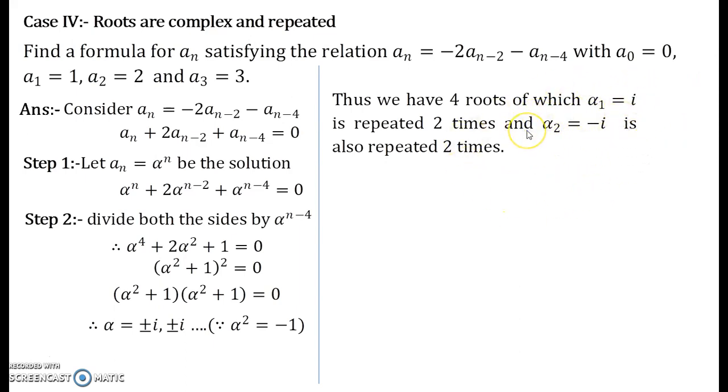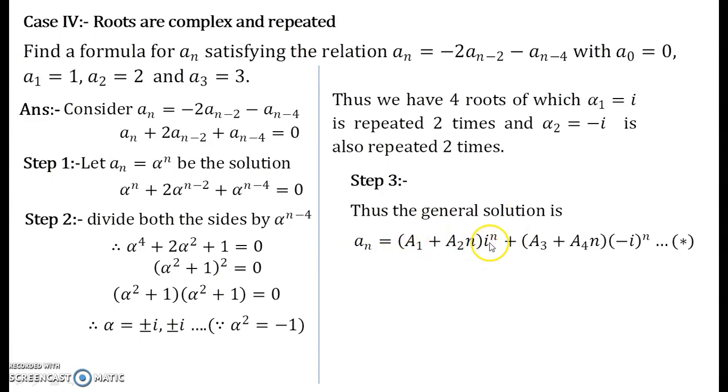Now in this case when the roots are repeated 2 times, we have already seen in my previous video lecture how to write the general solution. So the general solution will be written in this manner: for α_1 which is i and it is repeated 2 times, the solution will be (A_1 + A_2n)i^n plus (A_3 + A_4n)(-i)^n. So that will be the solution and you add up both the solutions to get your general solution.